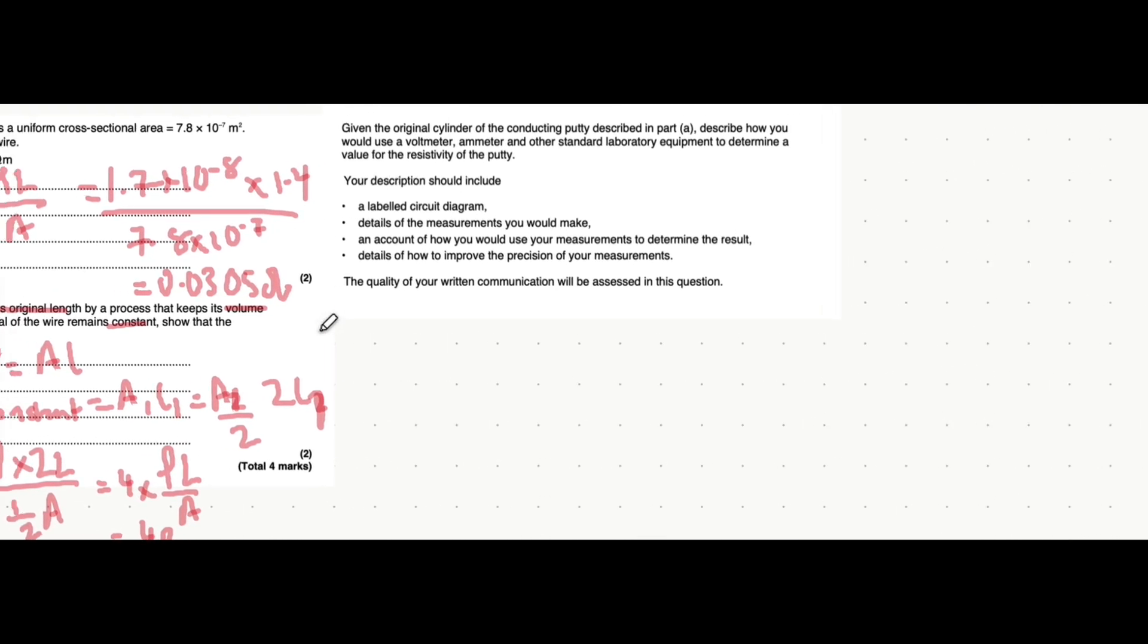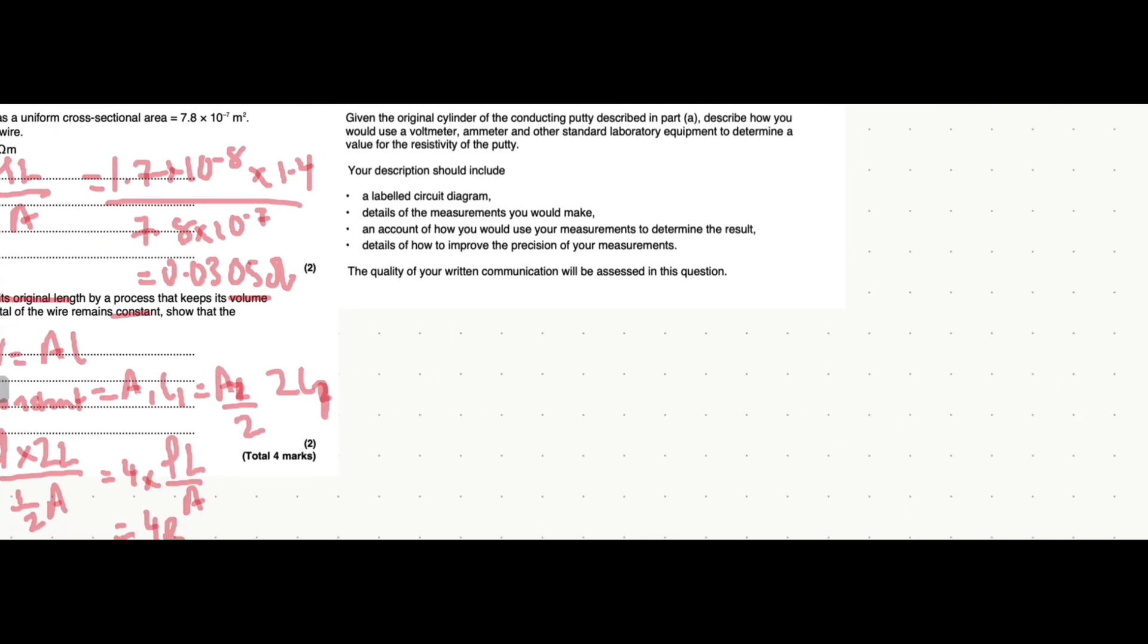And just to finish off today, let's have a look at this 6 mark question. So, I'm going to put, actually, before I even put a text box, let's have a look. So, it says that described in part A, but you don't really need that part of the question. We want to describe how you'd use a voltmeter, ammeter, and equipment to measure the resistivity. So, we mentioned resistivity is RA over L. Let's go through each of these individual components and how we can measure them.